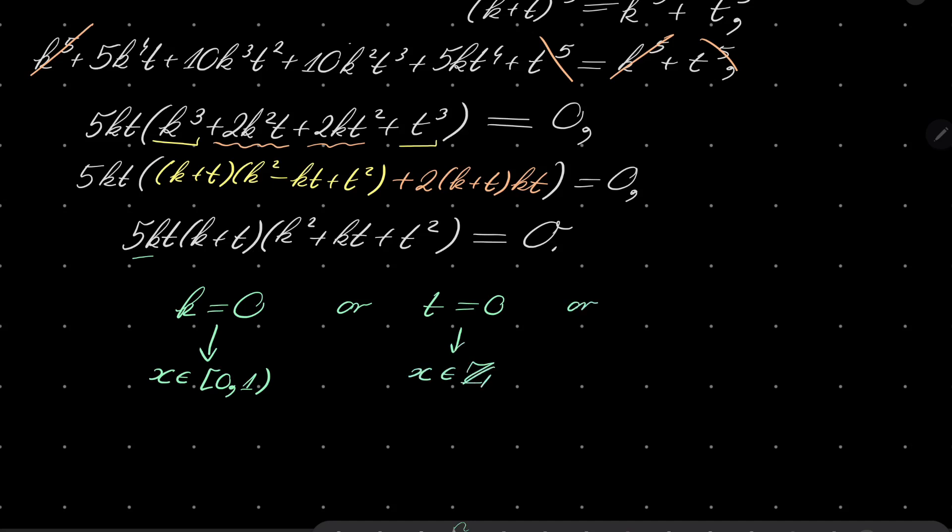So the next possibility is that k plus t equals 0. But notice that k plus t, k equals or t equals minus k. But notice that this is between 0 and 1, and this is an integer. The only possibility for this to be true is for both k and t to be 0. But these cases were already considered, so no new solutions there.